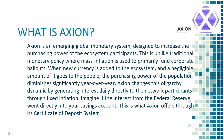When new currency is added to the ecosystem, the amount of it that goes to the people is negligible, and the purchasing power of the population diminishes significantly year over year. Axion changes this oligarchy dynamic by generating interest daily directly to network participants through fixed inflation. Imagine if the interest from the Federal Reserve went directly into your savings account — this is what Axion offers through its certificate of deposit system.